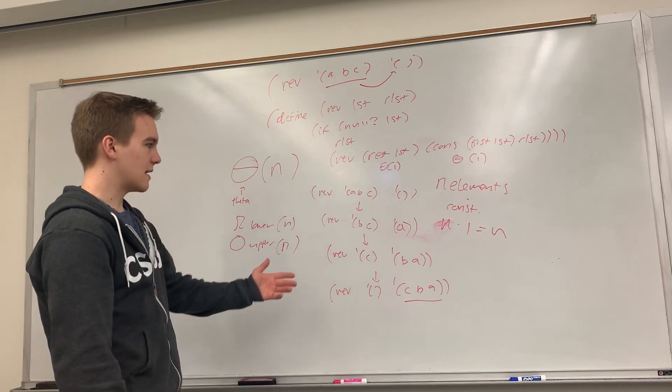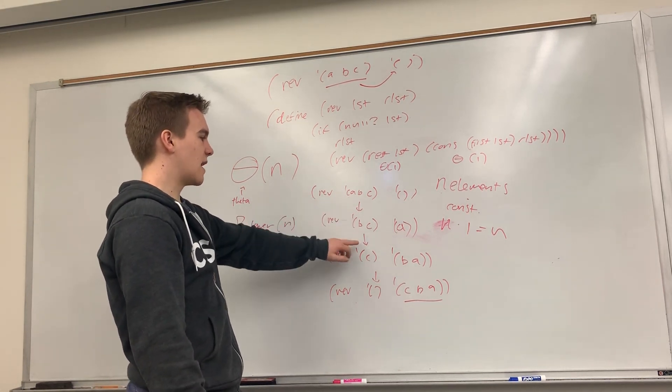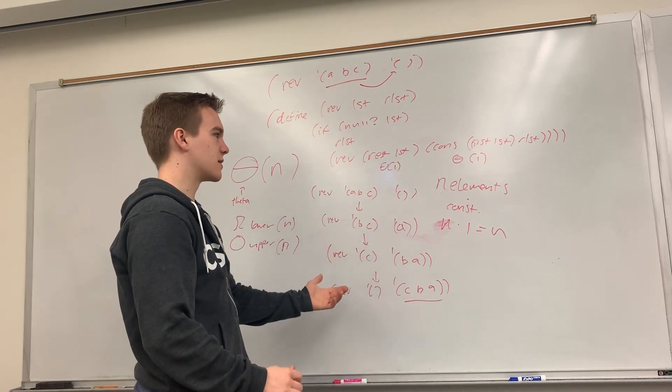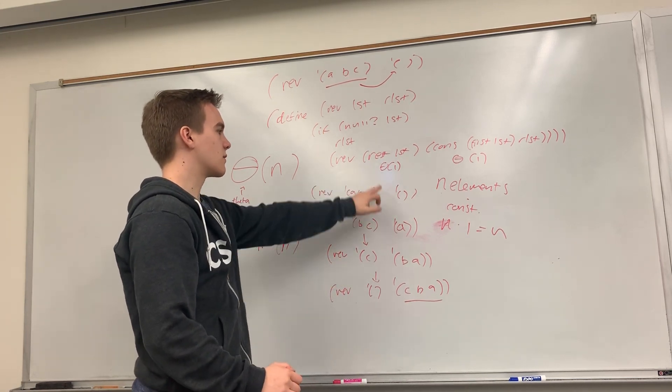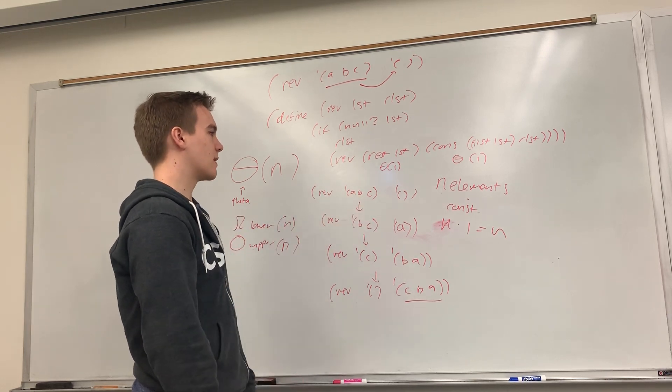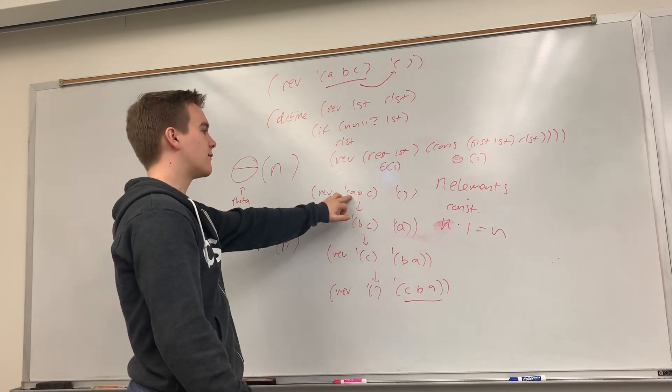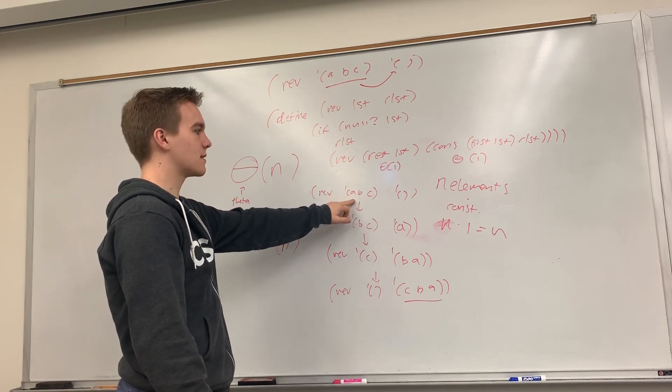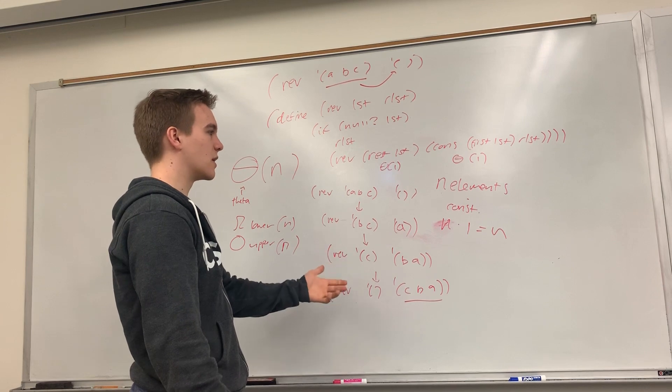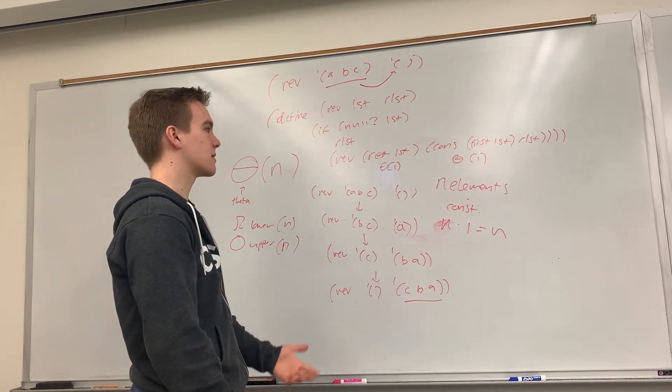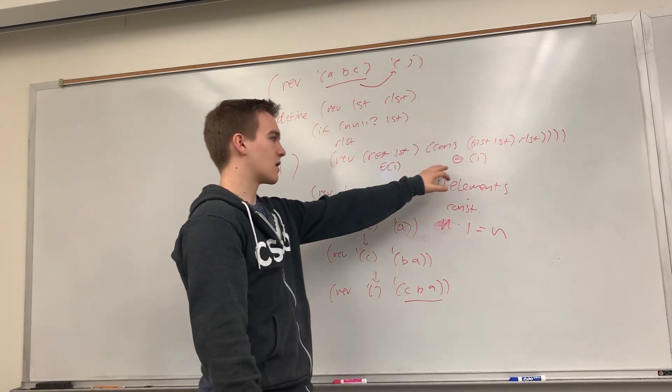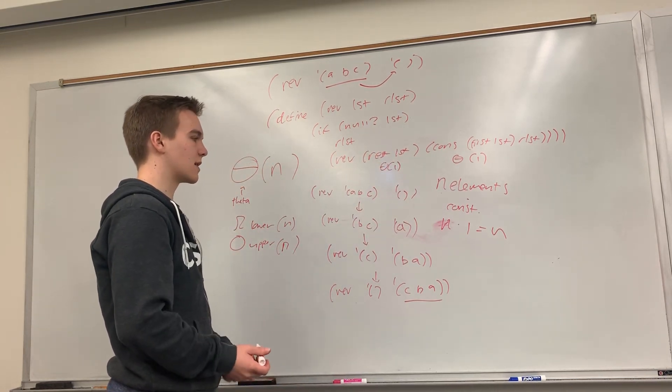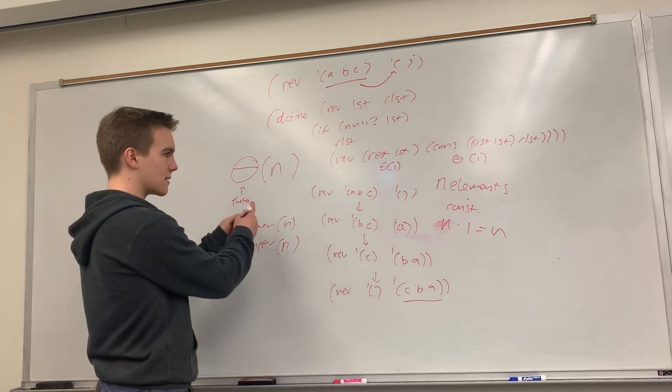We can explain it by saying, you know, each of the n elements has a constant number of operations run on it. Maybe I'll say, for each element in this list, each of the n elements, we need to run a constant number of constant time operations, rest and cons, before we return the final result. I think that would probably be an explanation that gets you full points for why this is theta of n.